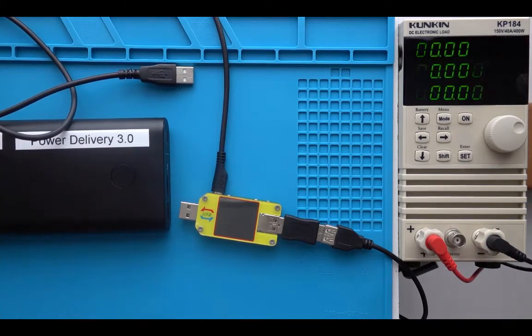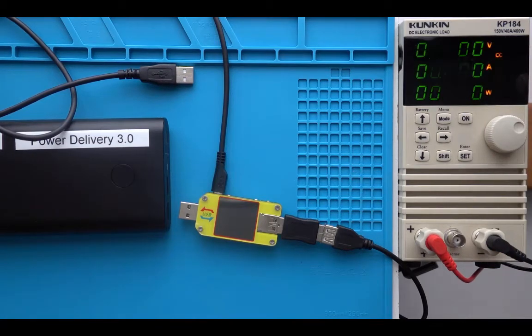A power bank and here an electronic load so that I can draw a constant current. I set it to draw a constant current here at 250 milliamps and that is important, that constant current.